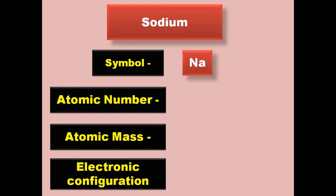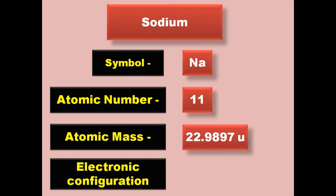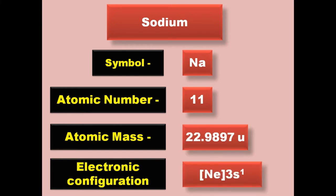Sodium has symbol Na, atomic number 11, atomic mass 22.9897, electronic configuration [Ne] 3s1. Sodium is an alkaline metal and exists in solid form at room temperature.